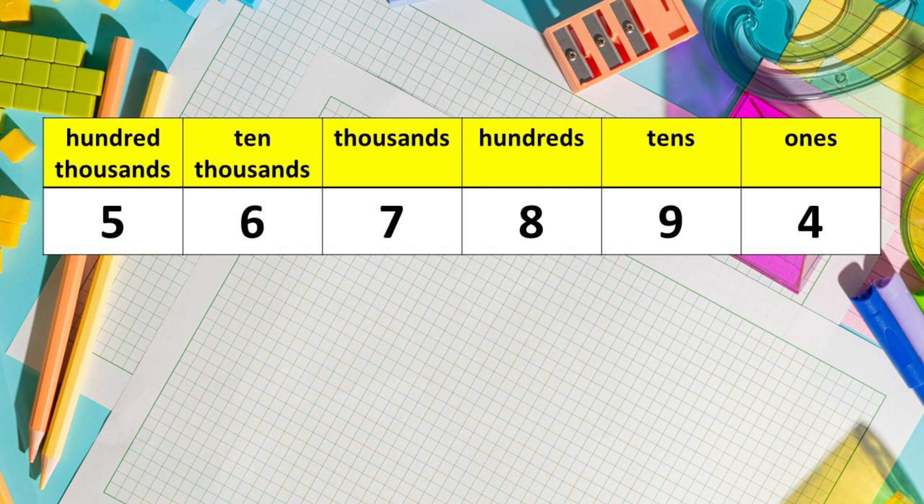The first place value in the chart is called the ones. Next is tens and followed by hundreds. Next is thousands, tens thousands, and since the number is 6 digits, we end up with a hundred thousands.